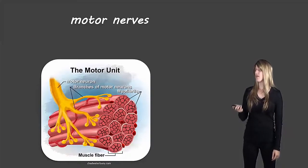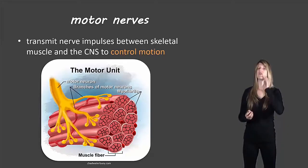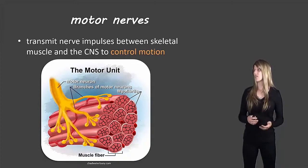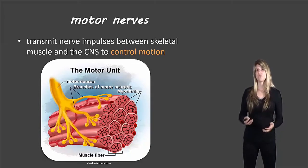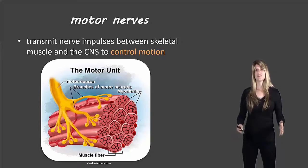Then motor nerves — these transport nerve impulses between the skeletal muscle and the central nervous system to control motion. This would be an example of when your body is reacting to something.